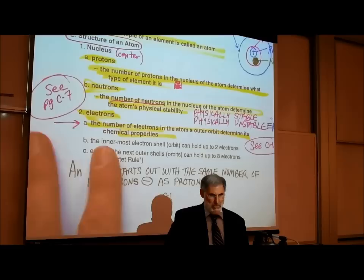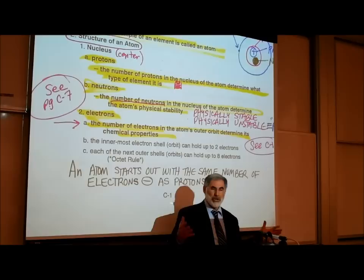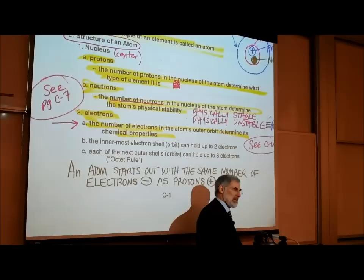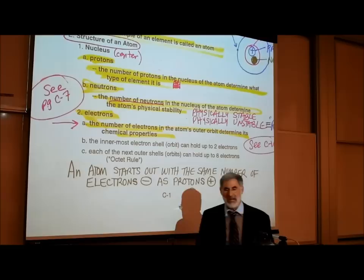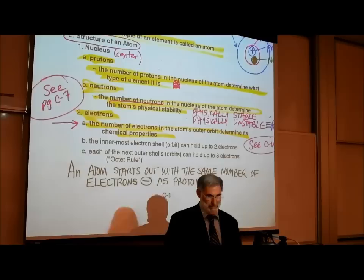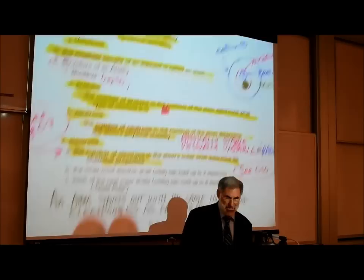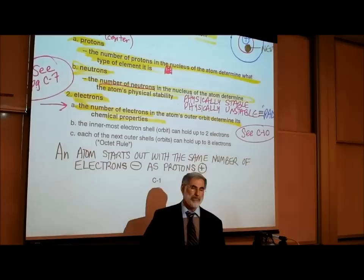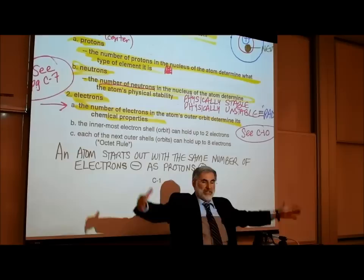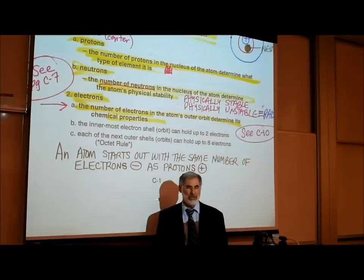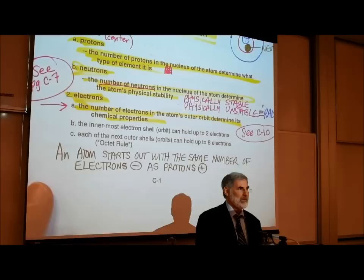The number of electrons in the atom's outer orbit determines its chemical properties. We're going to be learning that how many electrons are in the outermost orbit of that atom determine its chemical behavior. The innermost electron shell or orbit can hold up to two electrons. Each of the next outer orbits or shells can hold up to a maximum of eight electrons — that's known as the rule of eight, or the octet rule.